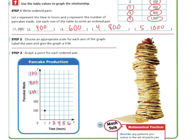So now we're going to graph our ordered pairs. The first one was 1 and 200, so we go over 1 and up 200. The next one was over 2 and up 400, because it's 2 and 400. The next one is 3 and 600, so I go over to 3 and up to 600. The next one is 4 and 800, so I go over to 4 and up to 800. And the next one is 5 and 1,000, so I go over to 5 and up to 1,000.